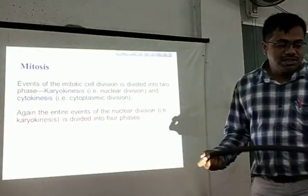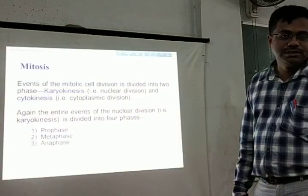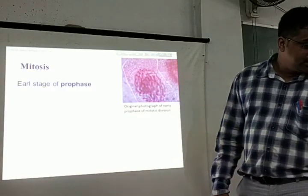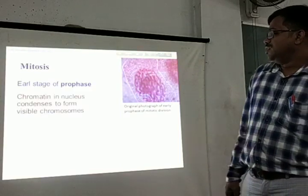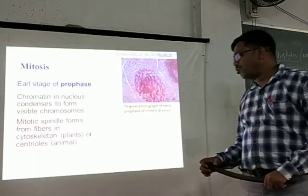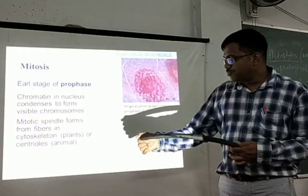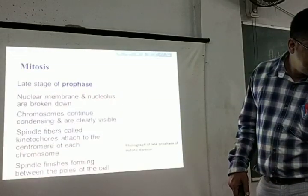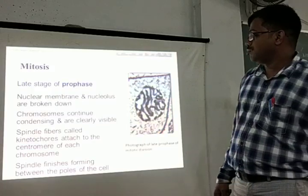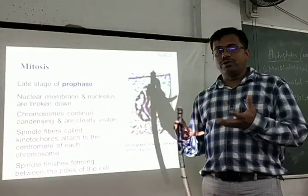Mitosis is divided into four phases: prophase, metaphase, anaphase, and telophase. This is a photograph of the early stage of prophase. Chromatin in the nucleus condenses to form visible chromosomes at this phase. The mitotic spindle forms from fibers in the cytoskeleton — from microtubules in the case of plant cells, or from centrioles in the case of animal cells. In late prophase, the nuclear membrane and nucleolus are broken down and dissolved, so chromosomes are freely floating in the cytoplasm.